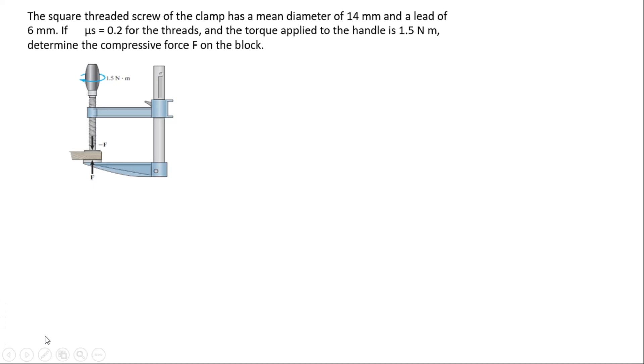On this video we will learn how to solve questions with screws. So let's check the question. The square threaded screw of the clamp has a mean diameter of 14 millimeters and a lead of 6 millimeters. If the coefficient of static friction is 0.2 for the threads and the torque applied to the handle is 1.5 Newton meters, determine the compressive force F on the block.